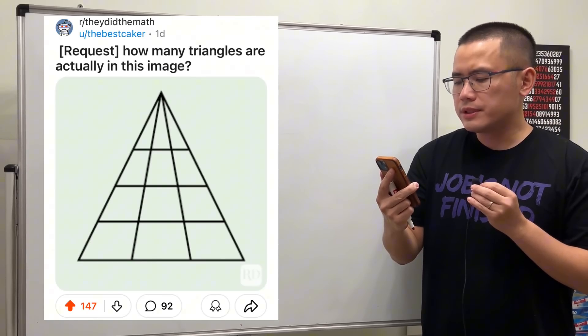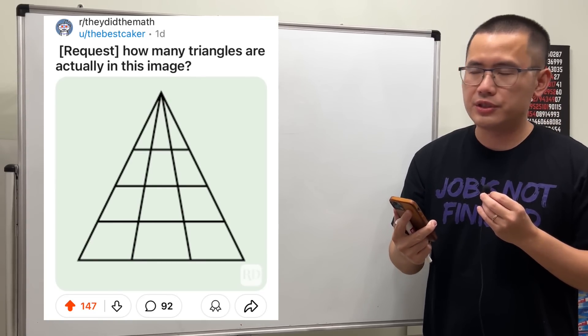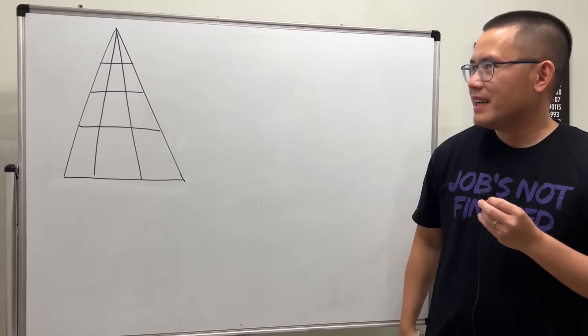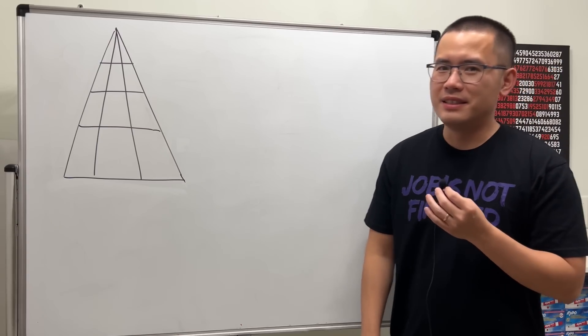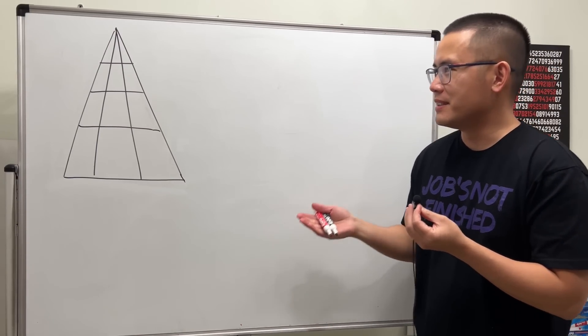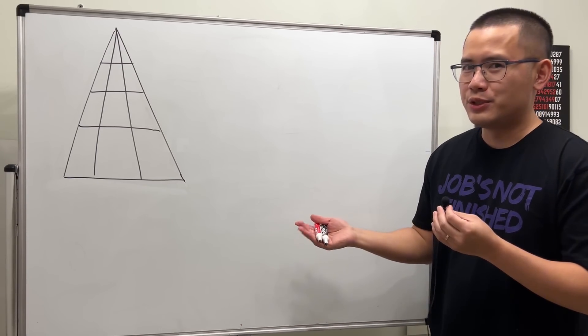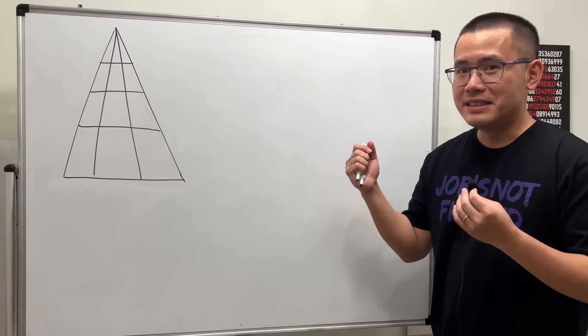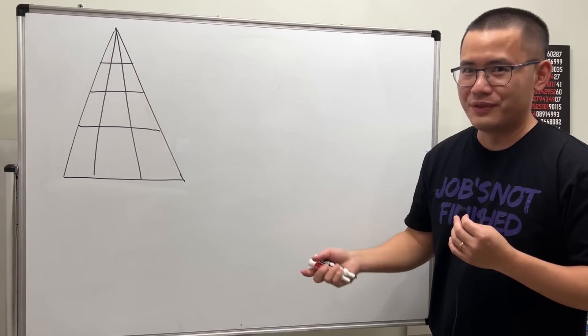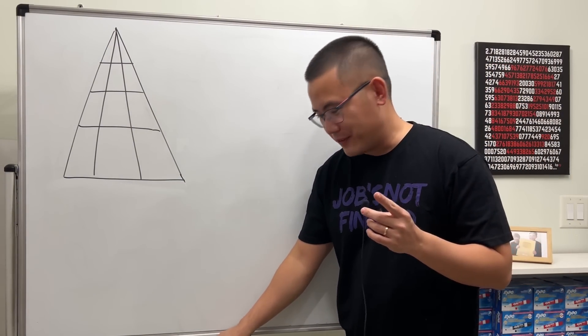Here's a request: how many triangles are actually in this image? Let's have a look. I like this kind of question a lot because there's an easy way and also an obvious way. The obvious way is just count it - it's not so many, so let's just do it first. I'll tell you the answer is 24.